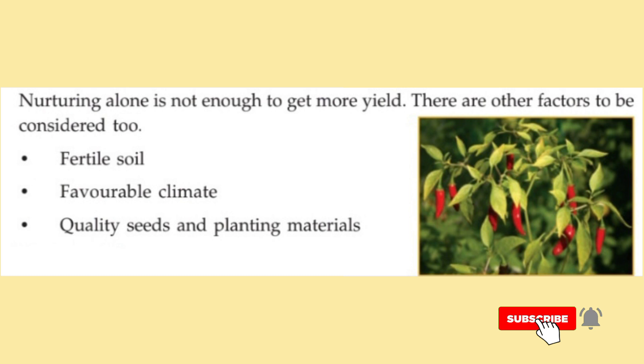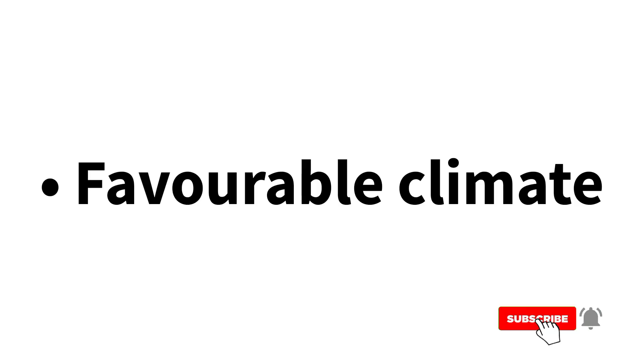What may be the other factors to be considered? Let's take a look. The factors include: fertile soil, favorable climate, quality seeds, and planting materials. We need a soil that is suitable for a plant to grow very well, so we need fertile soil. Then there is favorable climate — we know that each plant grows in different seasons. For example, mango, jackfruit, and watermelon grow in summer season. Different plants grow in different seasons and climates.